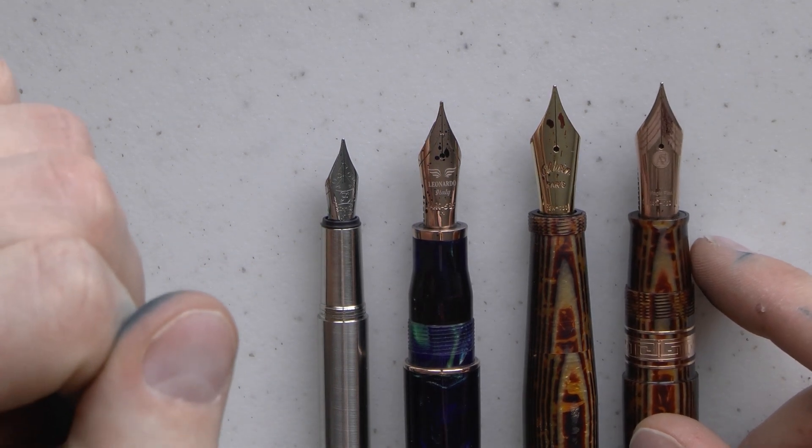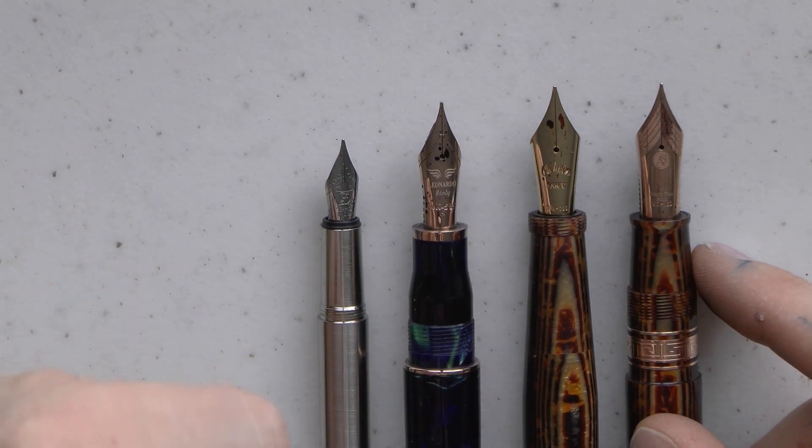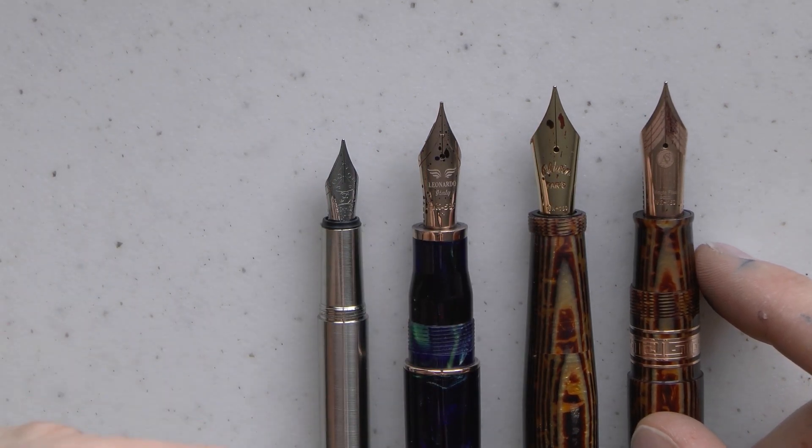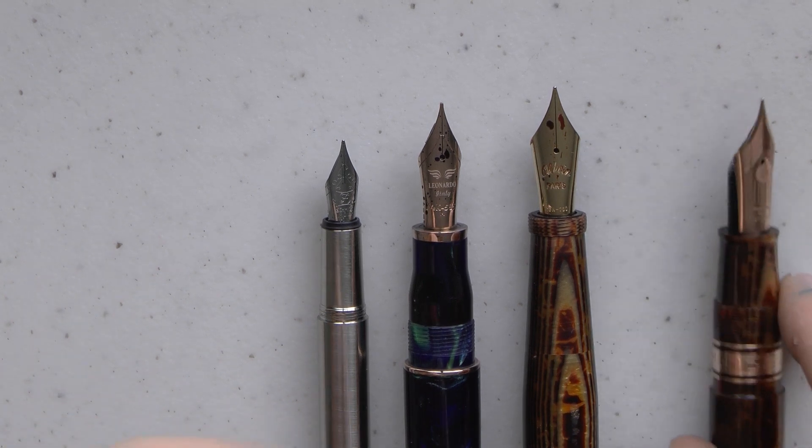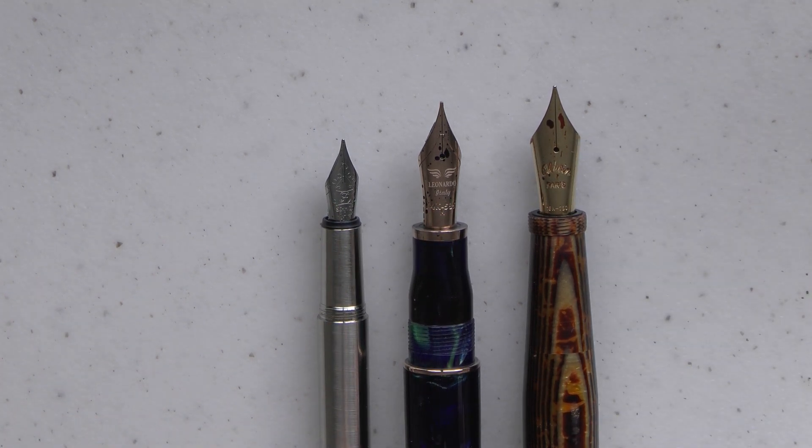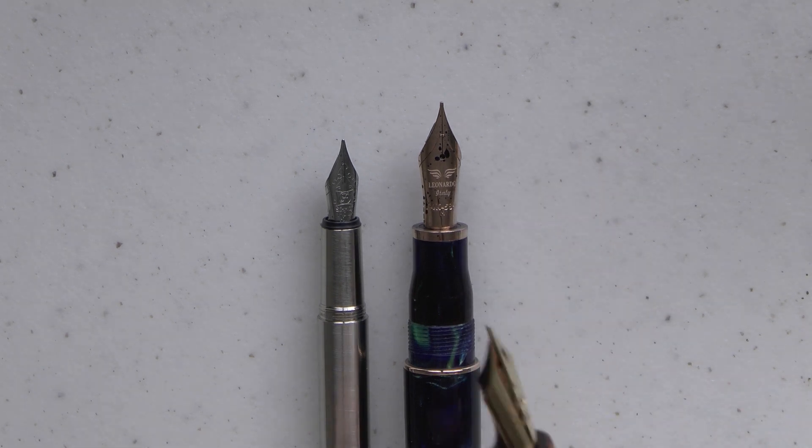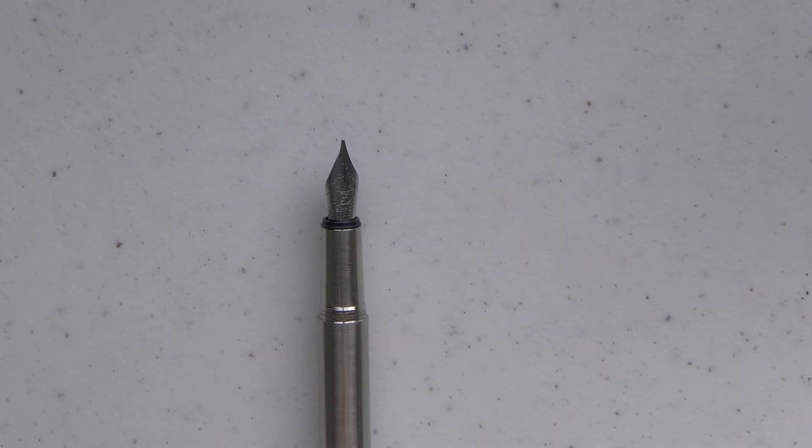All right, so here we have our four types of nibs. Now, sometimes you see sizes in between. Fountain Pen Revolution, for example, sells pens that have five and a half nibs. Well, I'm sure you understand what that means. That means that the diameter of the feed is five and a half millimeters, right? On some vintage pens or super, super tiny pens, you sometimes see a number four nib. So that also happens.